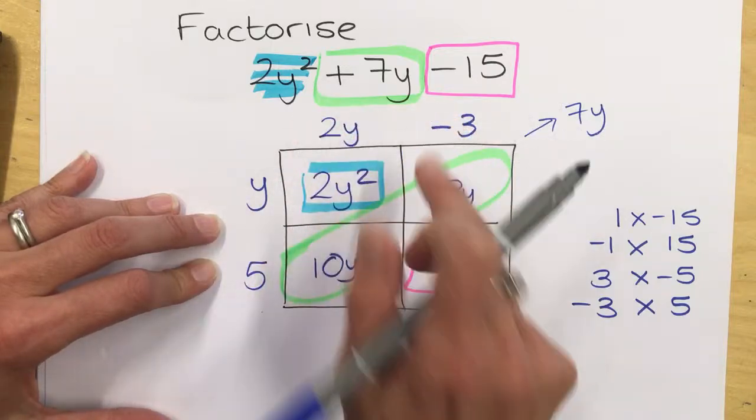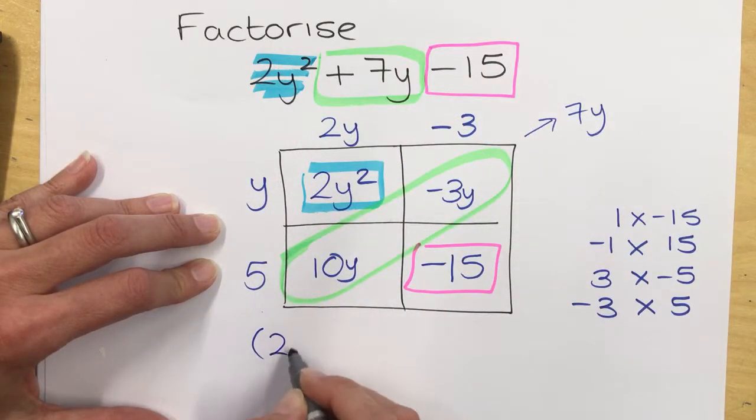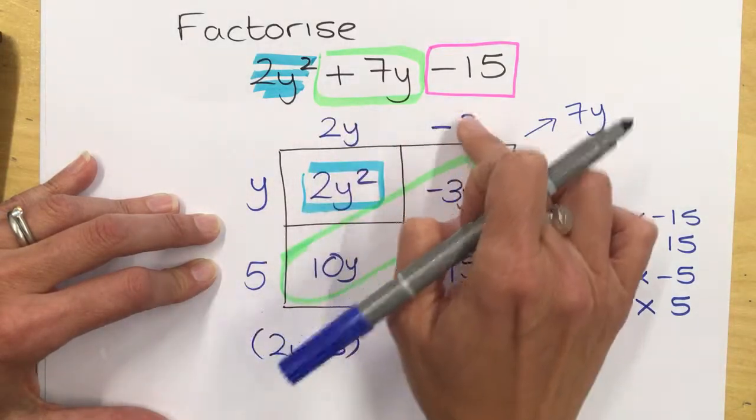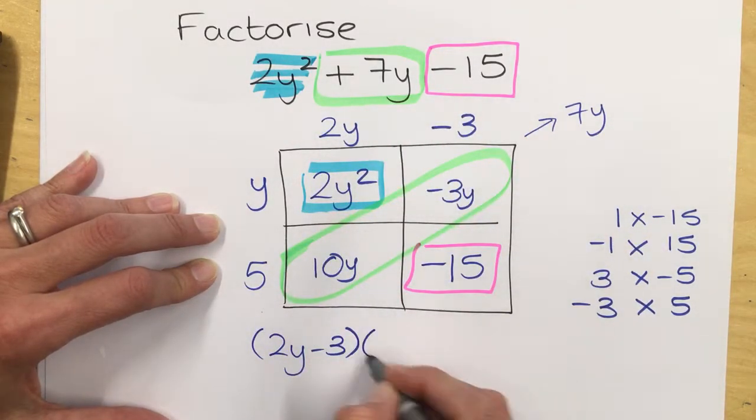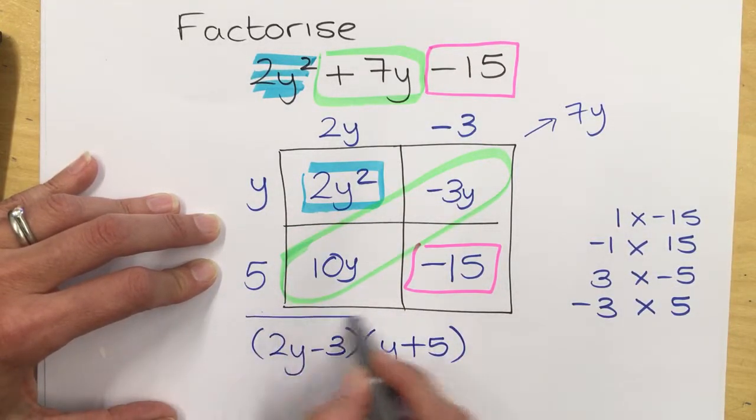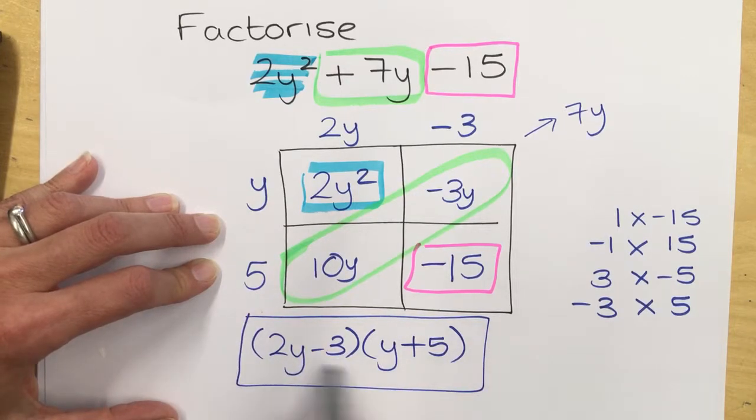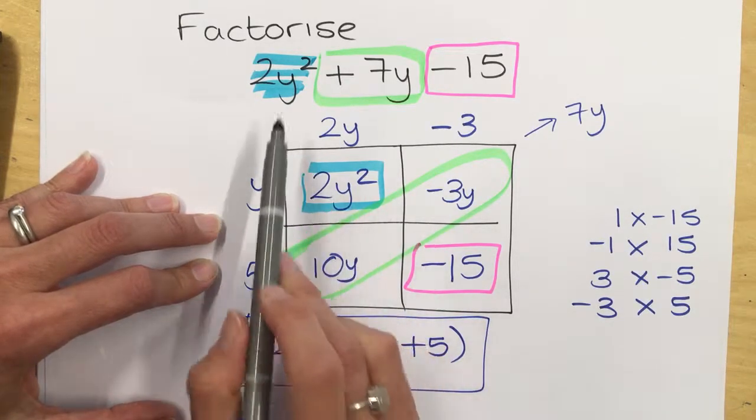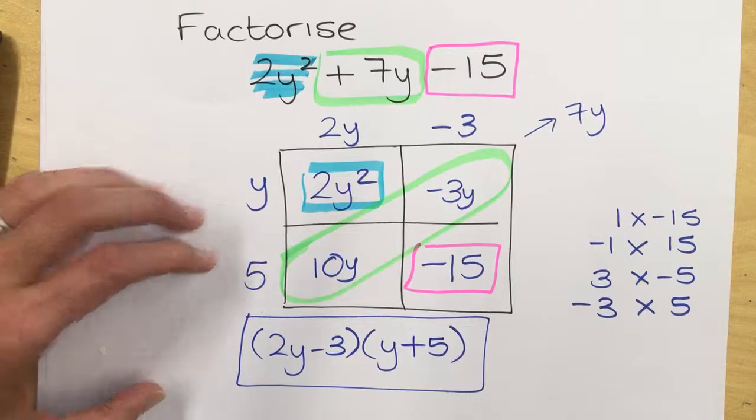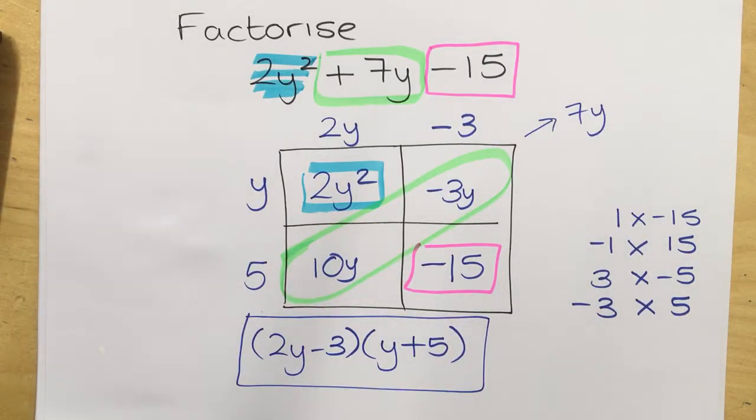So I use the values from the area on the outside to fill in my brackets. The 2y minus 3 is in one of the brackets, and the y and the positive 5 is in the second bracket. And that is my factorization of the quadratic where the coefficient of x or y squared is not 1.